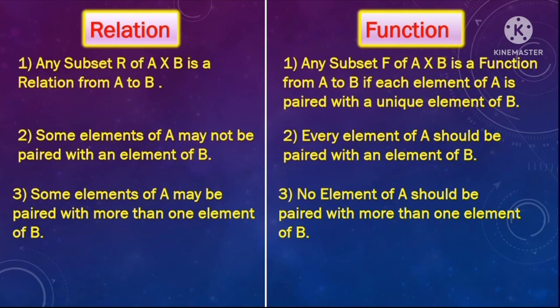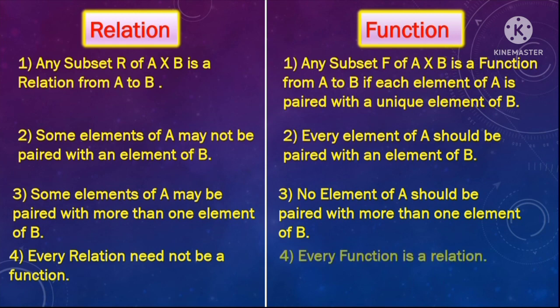We can summarize by saying that every relation need not be a function, but every function is a relation. That's because a function and a relation are both subsets of the same Cartesian product A cross B. But in a function, we have an extra condition that every element from the first set has to be paired with a unique element from the second set. That's why every function automatically becomes a relation, but every relation need not be a function.